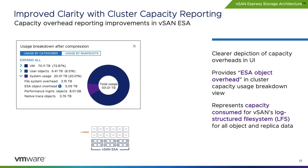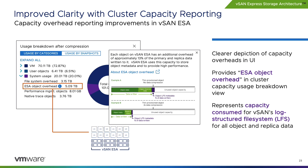The Express Storage Architecture in vSAN stores data differently than the original storage architecture. To accommodate for this, vSAN 8 Update 2 improves the reporting of capacity overheads for objects residing on the datastore. A new ESA Object Overhead category found in the Usage Breakdown section of the Cluster Capacity Dashboard will report the overheads associated with processing and storing data through vSAN ESA's Log Structured File System (vSAN LFS). Clicking the information icon expands a pop-up describing vSAN LFS overheads, helping administrators more accurately determine capacity consumption overhead.